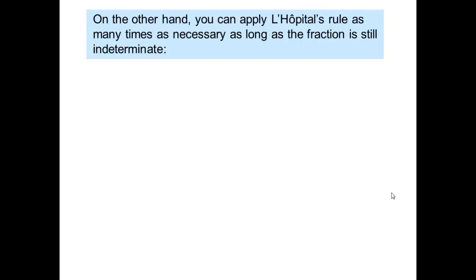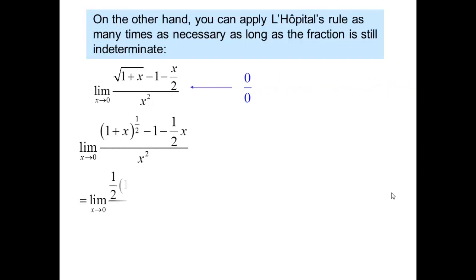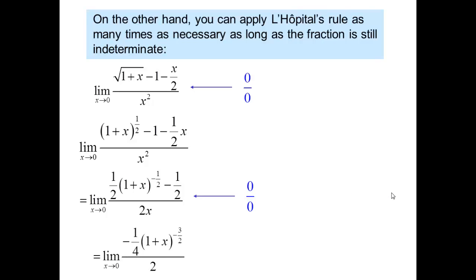On the other hand, you can apply L'Hôpital's rule as many times as necessary until the fraction is no longer indeterminate. Consider this example: putting x = 0 we get 0 by 0. So we differentiate, put x = 0 again — which turns out to be 0 by 0 again. So we differentiate it again and put x = 0. We get the answer as (-1/4)/2 which is -1/8, and since it is not 0 by 0 we stop differentiating.